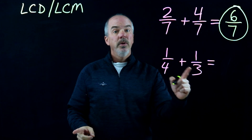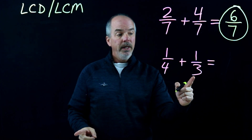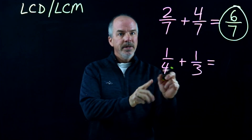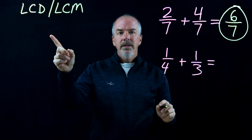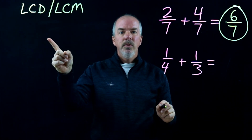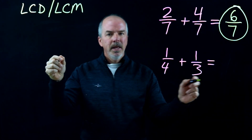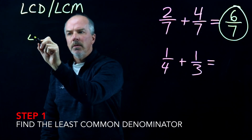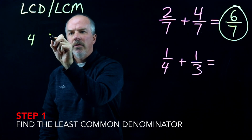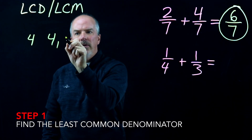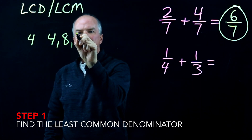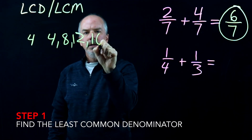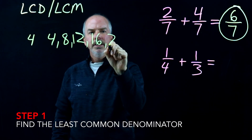1/4 plus 1/3 — we can see that our denominators are not the same. So we're going to have to find our least common denominator, which is also the least common multiple. I'm going to list out my multiples of 4: 4, 8, 12, 16, 20. I'll stop there.